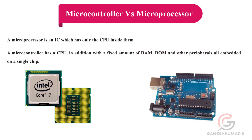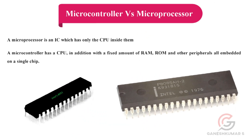Here we are going to see the 8051 and the 8085. The 8051 is a microcontroller and the 8085 is a microprocessor. The 8051 has a fixed amount of RAM, ROM, and other peripherals inside a single chip — it is a 40-pin IC. The 8085 is also a 40-pin IC but has only a CPU inside it.